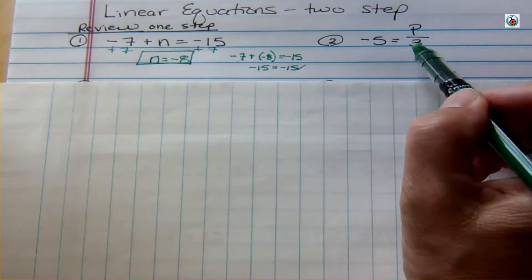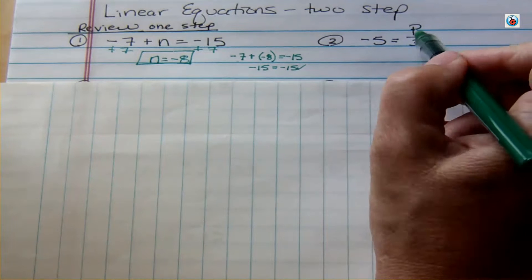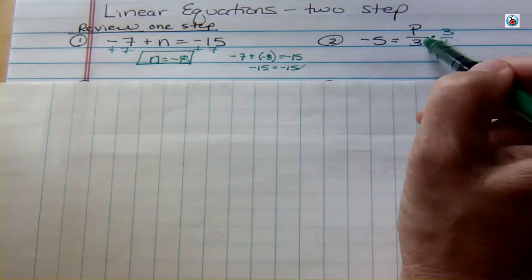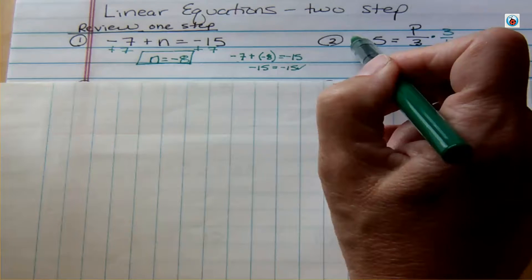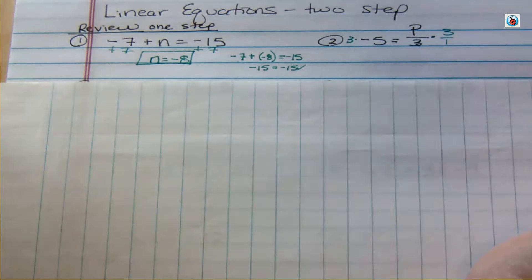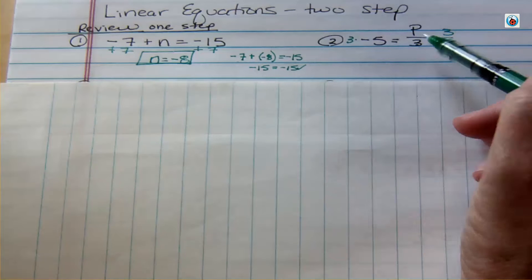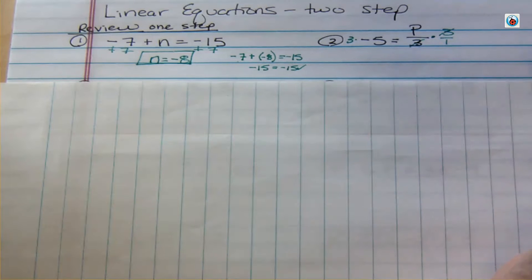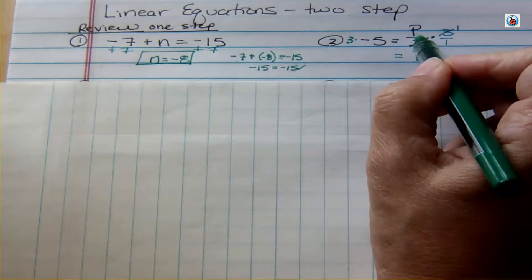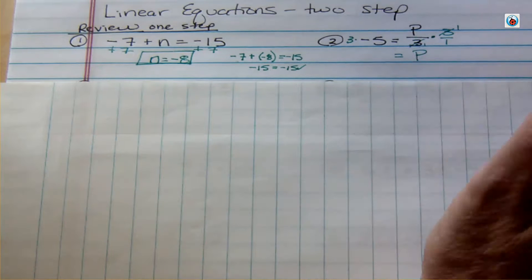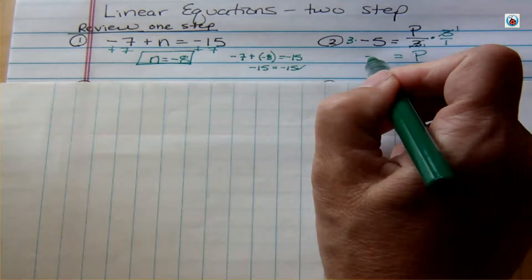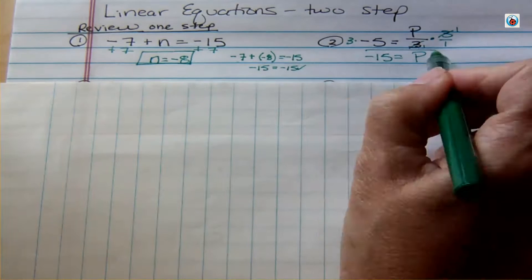We also talked about the multiplication property of equality. If p is being divided by 3, we do the opposite operation — division is the opposite of multiplication — so we multiply both sides by 3. Writing 3 as 3 over 1 lets us see the 3s cancel to 1, not to 0. That leaves p with a coefficient of 1, and 3 times negative 5 is negative 15.